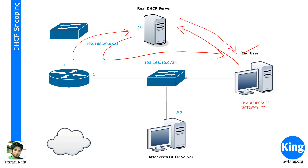If the real DHCP server assigns an IP address, it would have an IP address in that range — let's say 192.168.10.10 — and the gateway would be .1. This would be the ideal gateway because this is the exit point for this network, and then they can access the internet or other networks through this device. That's the normal way things should happen.